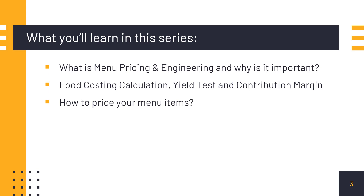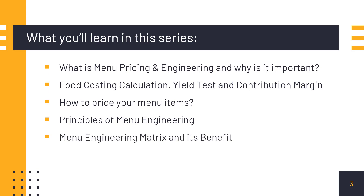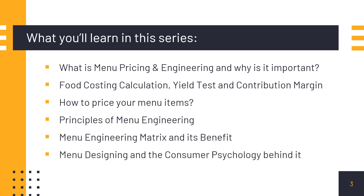After that, we will learn about how to price our menu items. Then we will talk about the principles of menu engineering and the reasons behind them. Then we'll talk about the menu engineering matrix and its benefits — basically there are four categories inside it and how you can use and discover them.